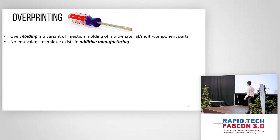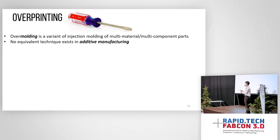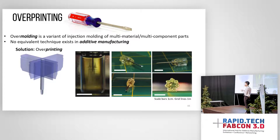Another advantage is overprinting. As you know, a screwdriver is manufactured using overmolding — you put a piece of metal inside a mold and mold plastic over it. We didn't have any equivalent technique in the 3D printing world, but now we do. We call it overprinting: you embed an object inside the volume and print over it. This screwdriver was printed to demonstrate this capability.